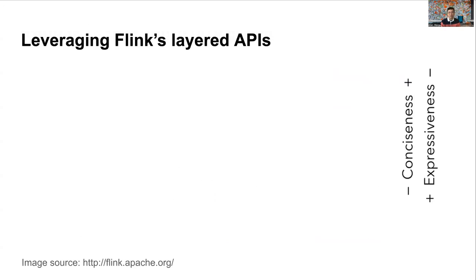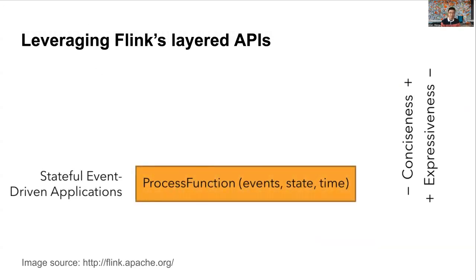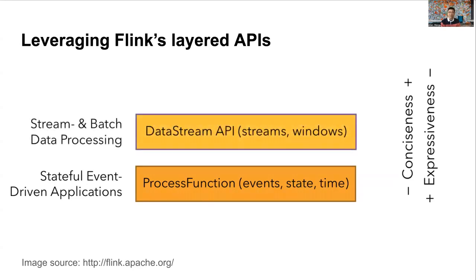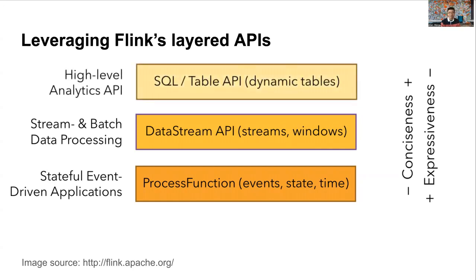One of the most important features from Flink is layered APIs. At the bottom, a process function allows engineers to create highly customized code with precise control over handling events, state, and time. At the next level up, Flink offers DataStream APIs with built-in high-level functions to support different aggregations and windowing, so engineers can create stream processing solutions with just a few lines of code. And on top, we have SQL and Table APIs, which offer casual data users the opportunity to write Flink applications in a declarative way using SQL instead of code.